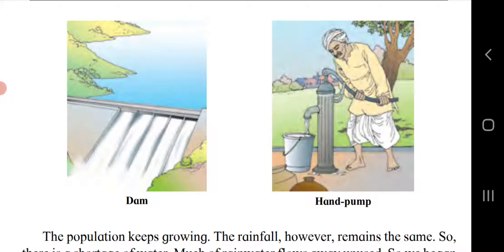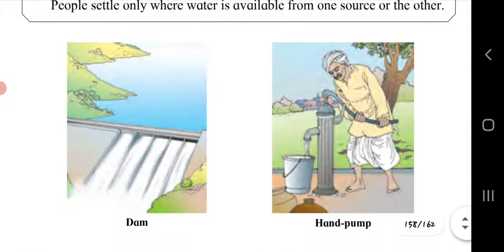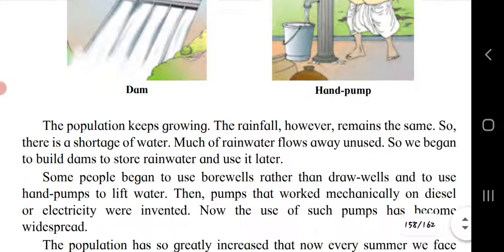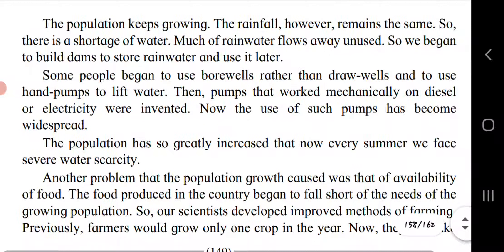During water scarcity, we can make use of dams and hand pumps. The population keeps growing while rainfall remains the same, so there is a shortage of water. Much of rainwater flows away unused, so we began to build dams to store rainwater and use it later. By using human intellect we started building dams; water gets stored during the rainy season and is used for survival when needed.